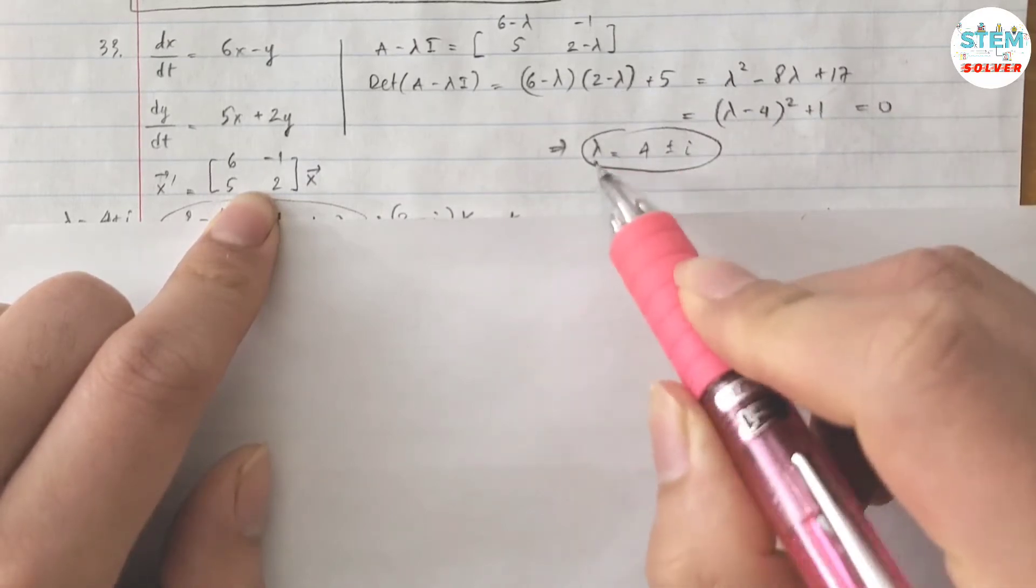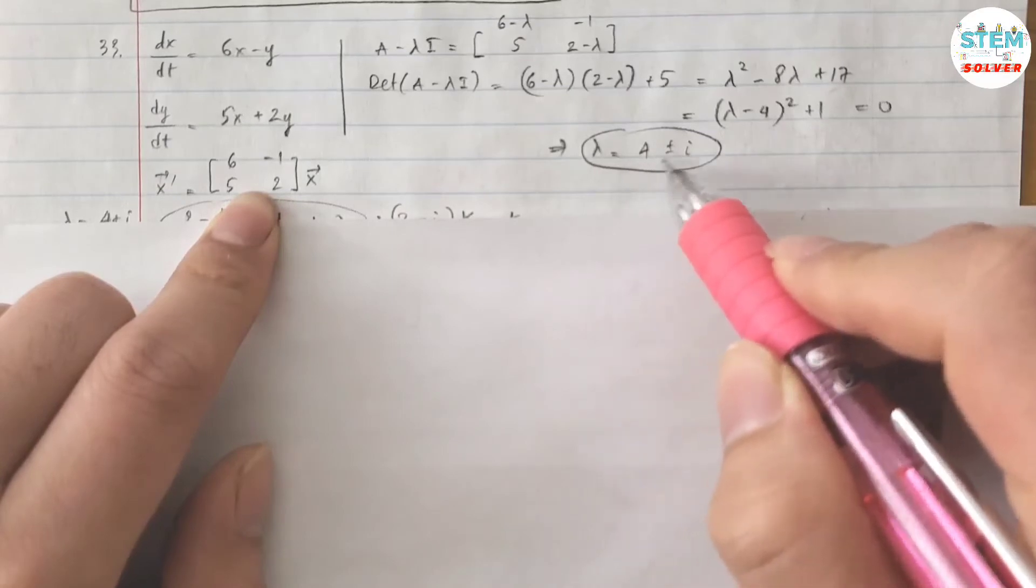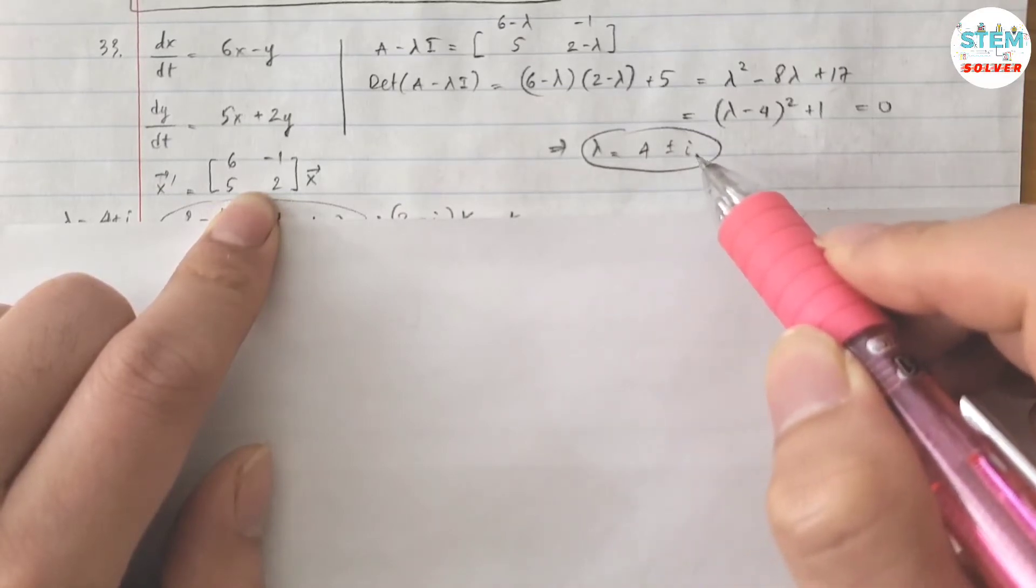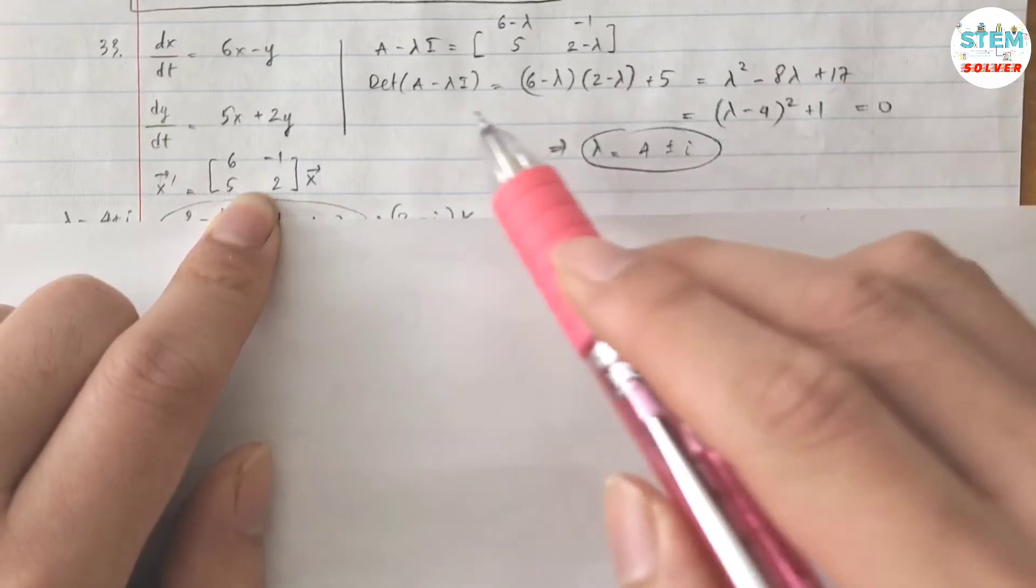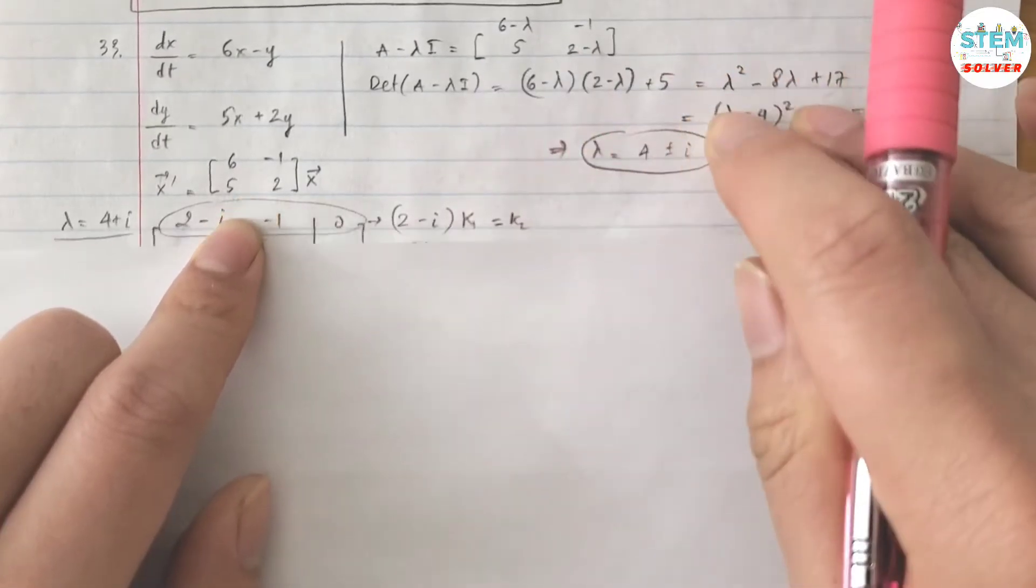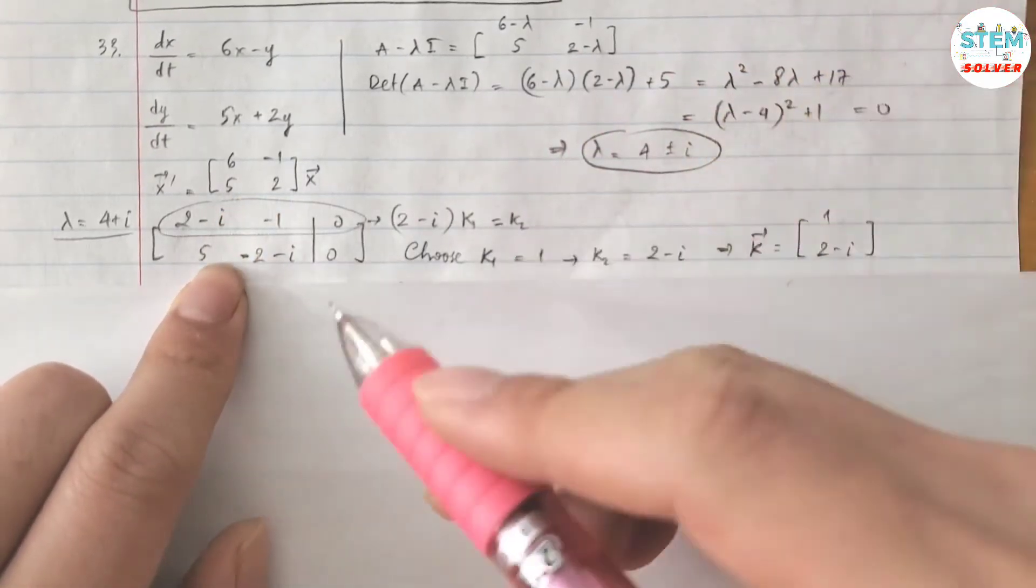Set this equal to 0, solve for λ, you will get a complex answer which is 4 plus minus i. So plug this into this one, you will get a new matrix which is this matrix, augmented with 0.